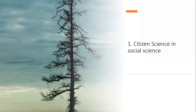Our first topic is citizen science and social science. Social science is the study of human society and the relationships among individuals within that society. It encompasses many different research fields like anthropology, linguistics, history, political science and economics. Like any natural sciences, it can be driven by empirical research, and any social science which involves the acquisition and analysis of empirical data could be turned into a citizen science project — and there's a growing number of examples.